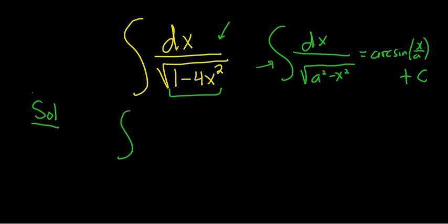So what we'll do is we'll rewrite it as dx over the square root of 1 minus, and then we'll rewrite 4x squared as 2x parentheses squared, because it's the same thing as 4x squared.